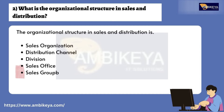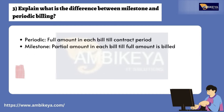Question number two: What is the organizational structure in Sales and Distribution? The organizational structure in Sales and Distribution consists of: Sales Organization, Distribution Channel, Division, Sales Office, and Sales Group.